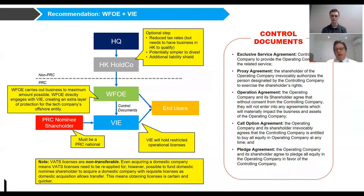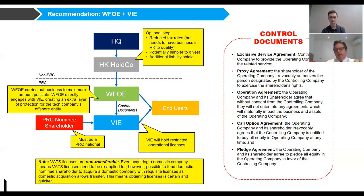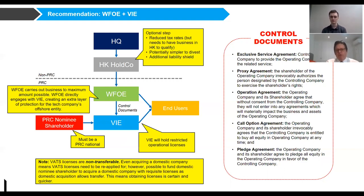This slide goes into more detail about how the contracts work. Firstly, we have the headquarters. Quite often people will put a Hong Kong holding company or a Singapore holding company in there. This is simpler to divest, provides an additional shield of liability, and you can get reduced tax rates if you actually operate in Hong Kong or Singapore. Then they would set up the WFOE, and then you have these control documents with the VIE.